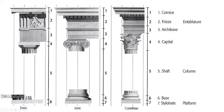The orders had very specific structures for every part. In both Ionic and Corinthian there is a base and a stylobate — a structure for the bottom of the column — whereas in Doric the column sits directly on the platform. The most obvious difference between them is the capitals: the Doric capital is very simple and reductive, while the Ionic is more decorated, and the Corinthian is the most elaborately decorated of all.